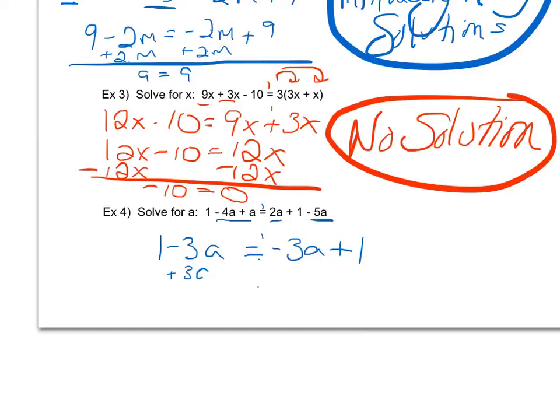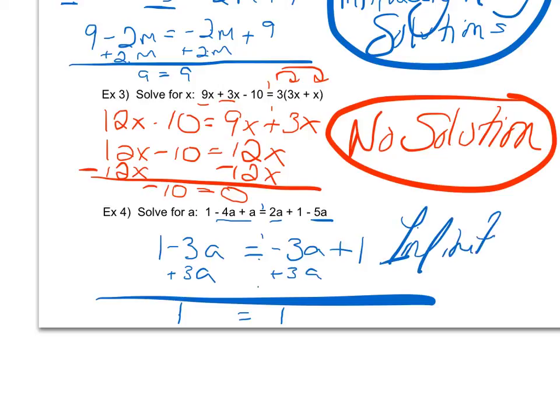I'm going to go ahead and add 3a here, and I get 1 = 0a, or nothing, and then equals 1. So notice 1 is always equal to 1, so since that's a true statement, I'm going to say infinitely many solutions.